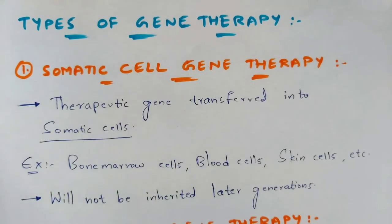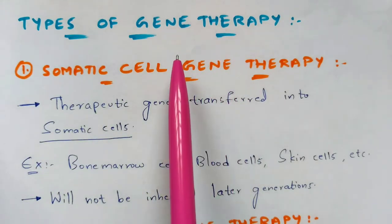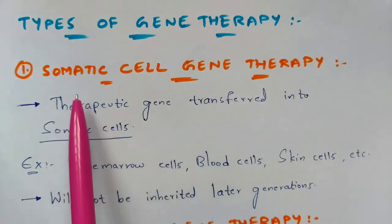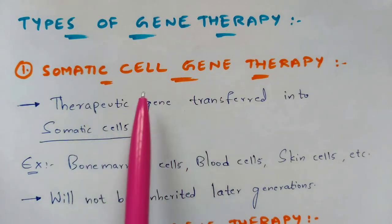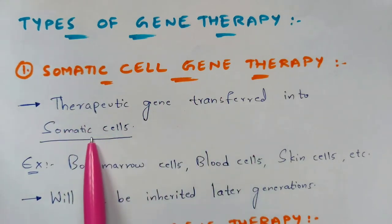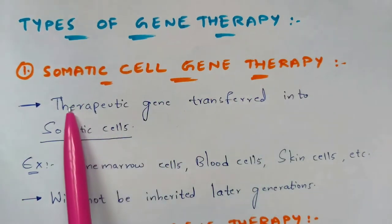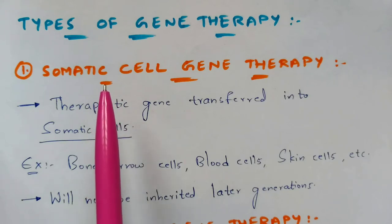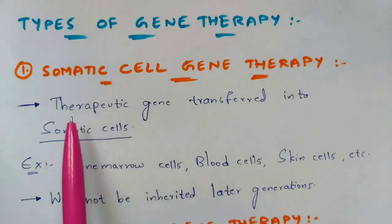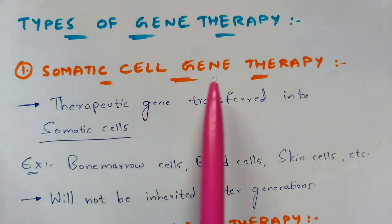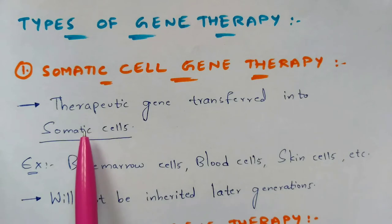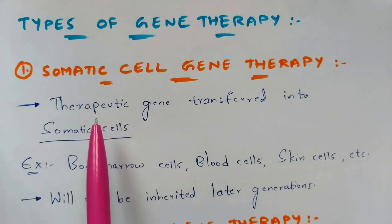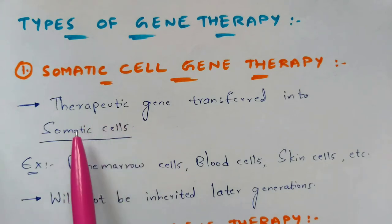There are two types of gene therapies: somatic cell gene therapy and germline gene therapy. In somatic cell gene therapy, the therapeutic gene — that is, the functioning gene that replaces the faulty gene — is transferred into somatic cells of the patient. Hence it is called somatic cell gene therapy.